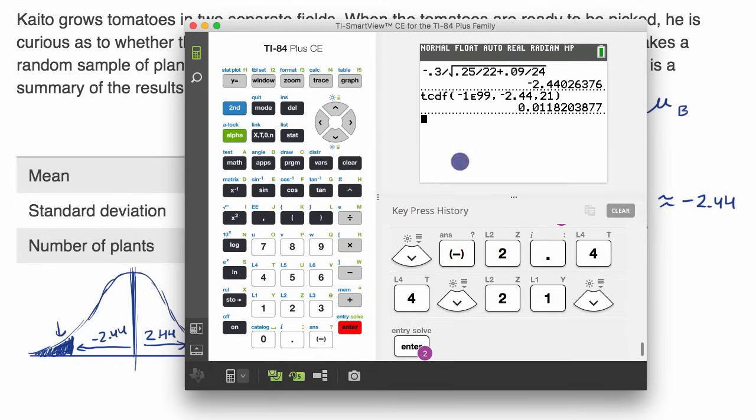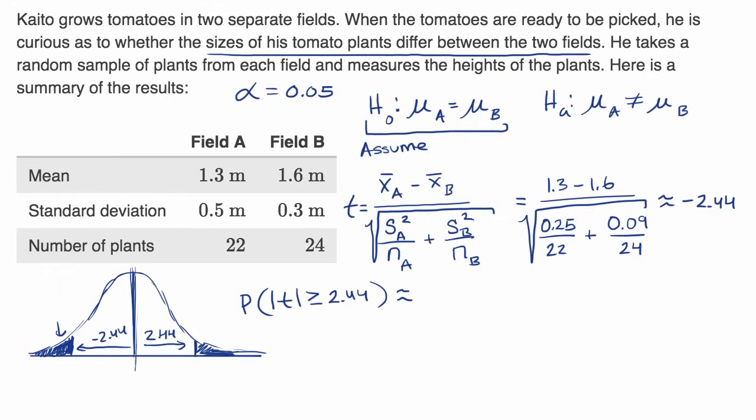Now I can paste and I get that number right over there. If I multiply that by two—because this just gives me the probability of getting something lower than that, but I also want to think about the probability of getting something 2.44 or more above the mean of our t-distribution—times two is going to be equal to approximately 0.024.